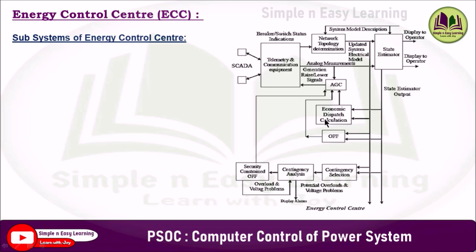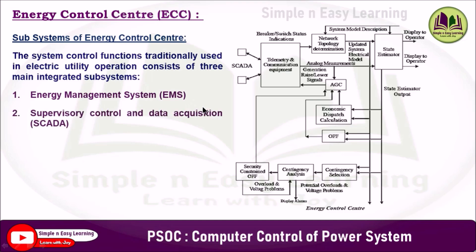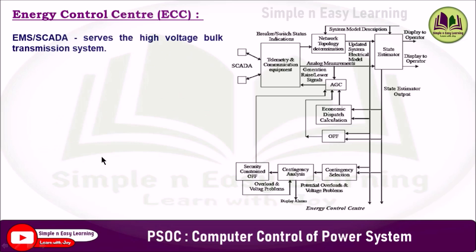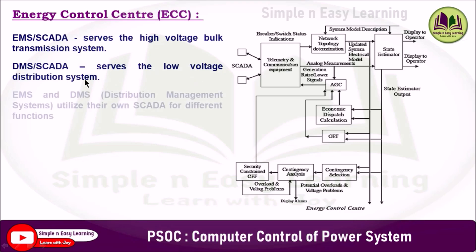The system control functions traditionally used in electric utility operation consist of three main integrated subsystems. First, the energy management system (EMS). Second, the supervisory control and data acquisition system (SCADA). Third, the communications interconnecting EMS and SCADA. EMS-SCADA serves the high-voltage bulk transmission system. EMS and DMS utilize their own SCADA for different functions. This is the complete structure of the energy control center.